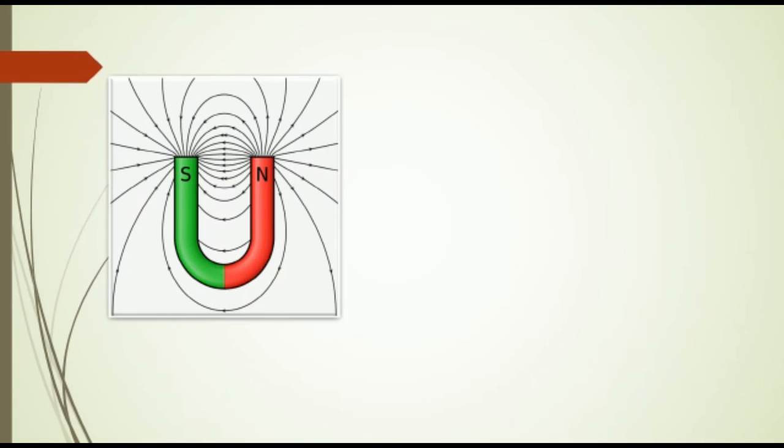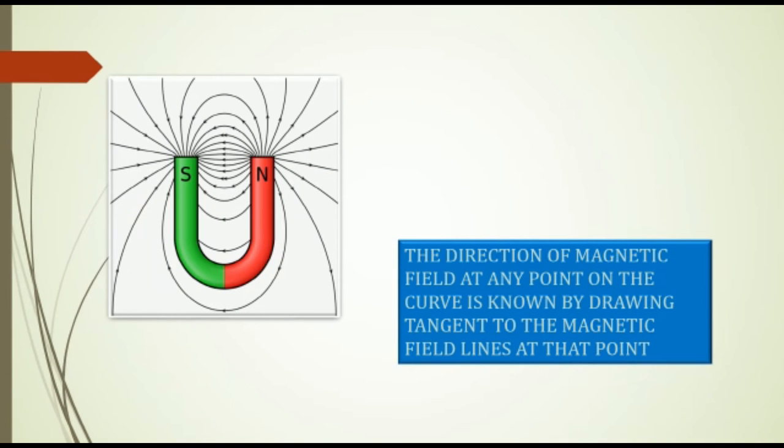The direction of the magnetic field at any point on the curve is found by drawing a tangent to the magnetic field lines at that point.